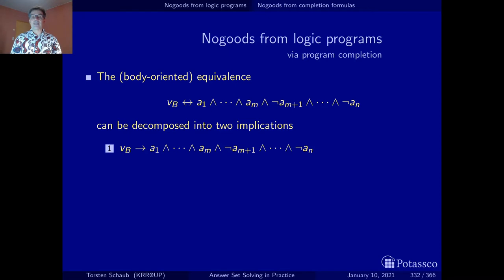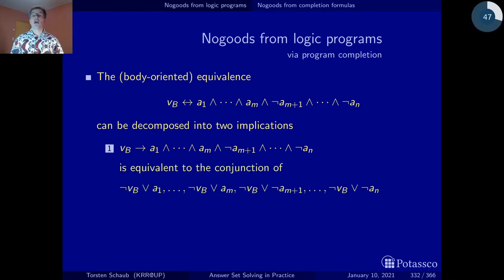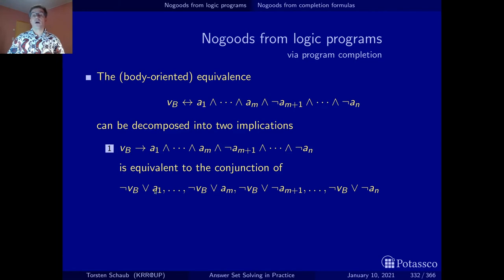This single implication can be decomposed into a conjunction of clauses, where each of them says: either the body is false or the positive body literal is true, or either the body is false or the negative body literal is true.